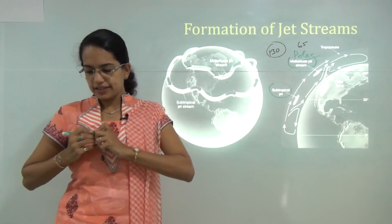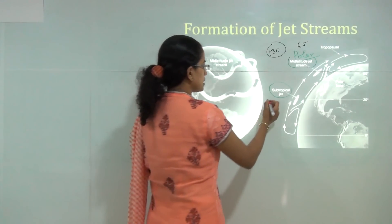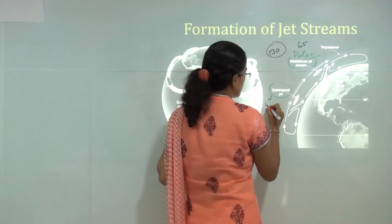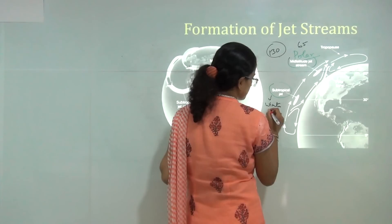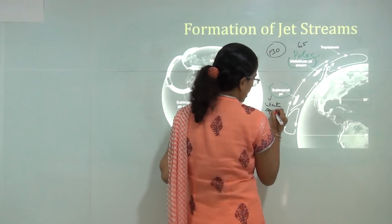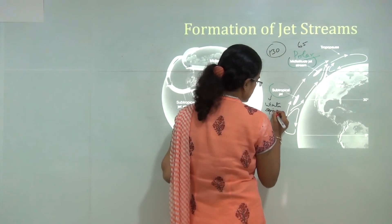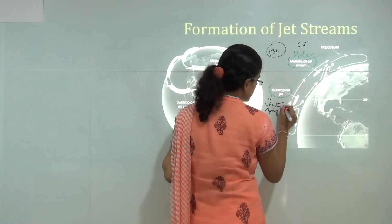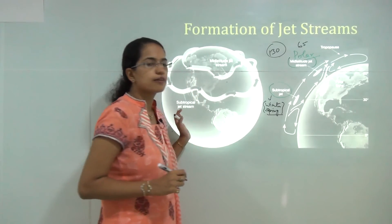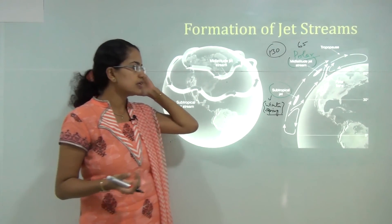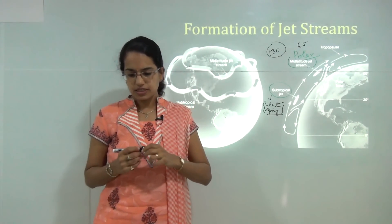Subtropical jet streams are intense only during winter and early spring, because during those seasons there is a higher contrasting temperature. As a result, jet streams are much stronger and more intense during winters and early spring.